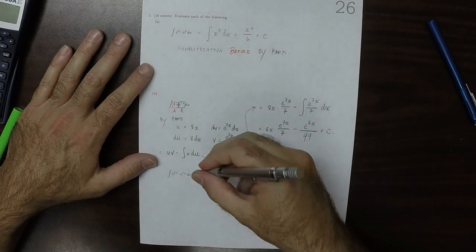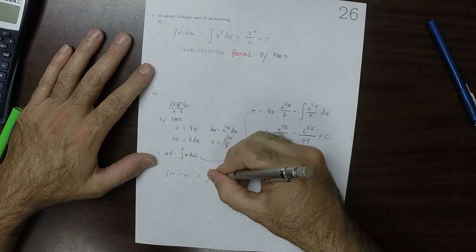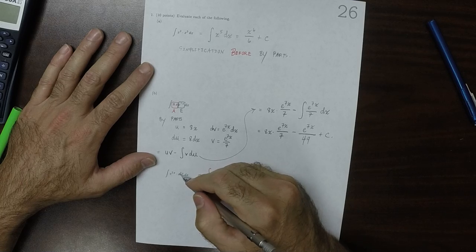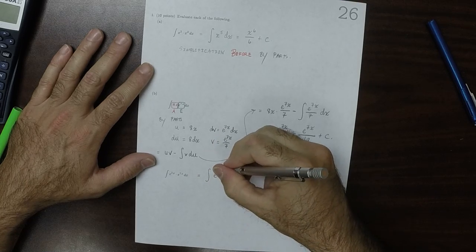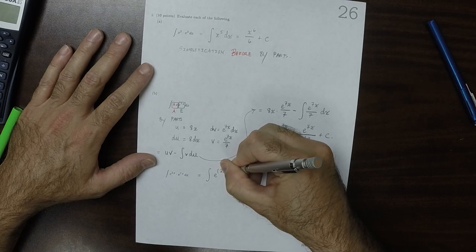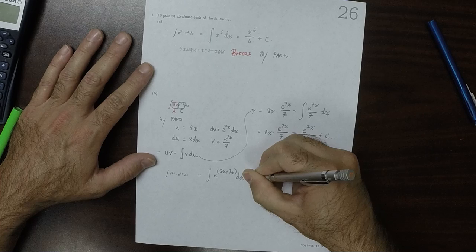And then for this one, this one again can be simplified. Because you can add exponents, so that would be e to 2x plus 7x dx, which is of course e to 9x.